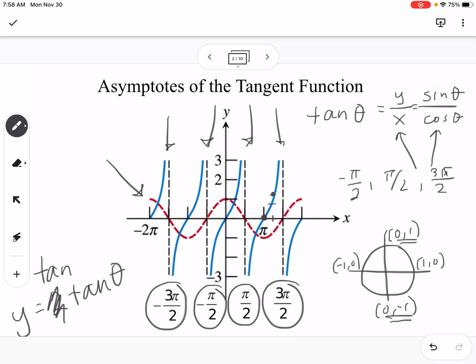If there's no 2 there, then you're just going to go over 1, up 1, before you put a dot. So that's kind of how we graph tangent.